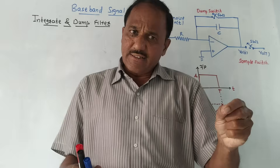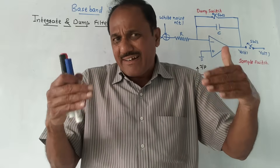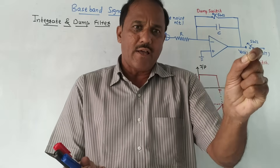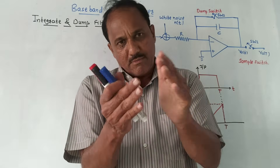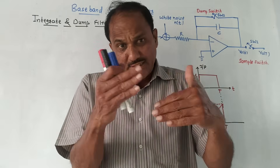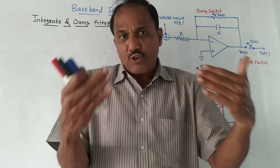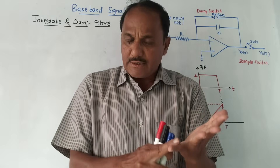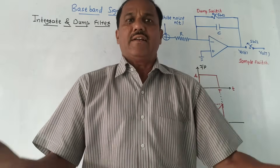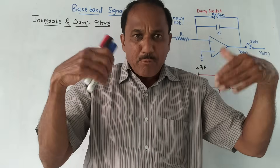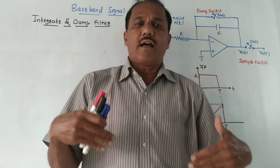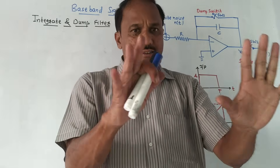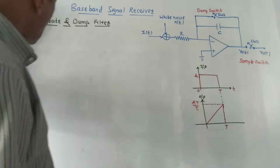There are chances that you might recognize the data wrongly. Using some logic and calculation we obtain a result, and if that result is wrong there is a concept of probability of error — that is, what are the chances that there is an error while predicting the data at the output. This is the basic concept.